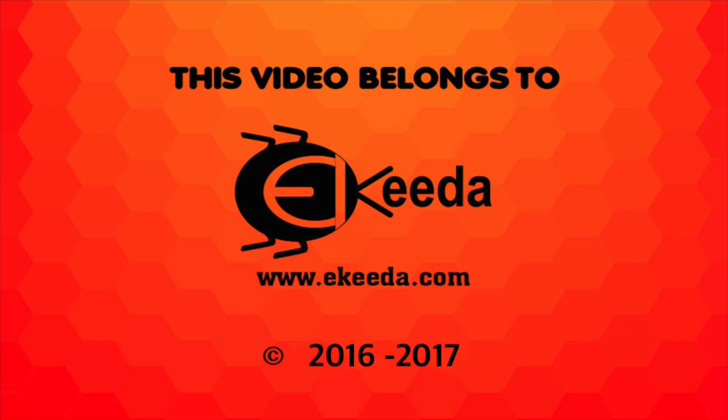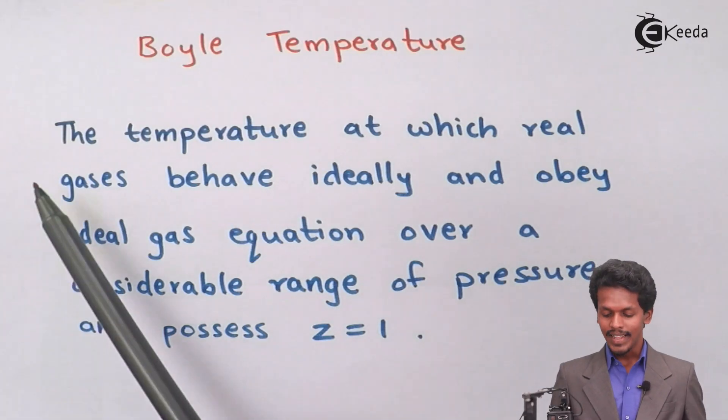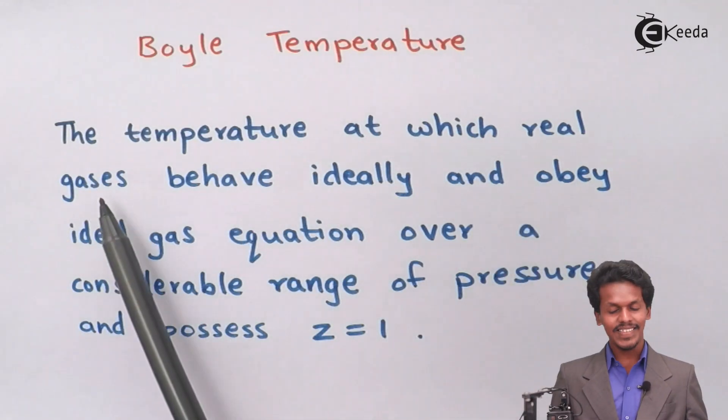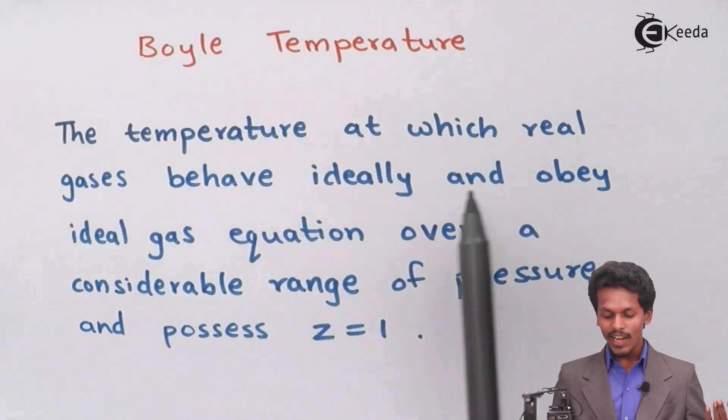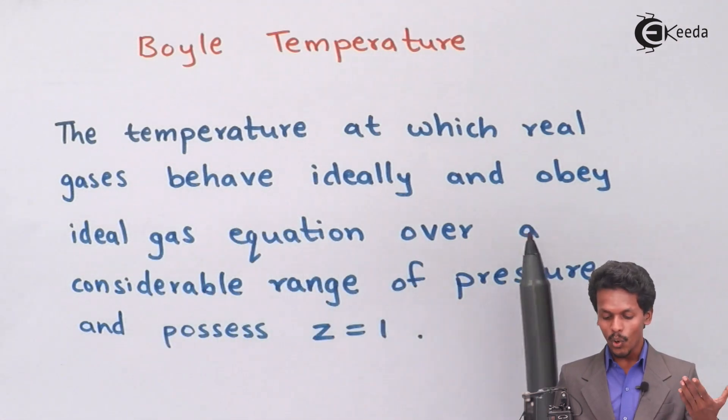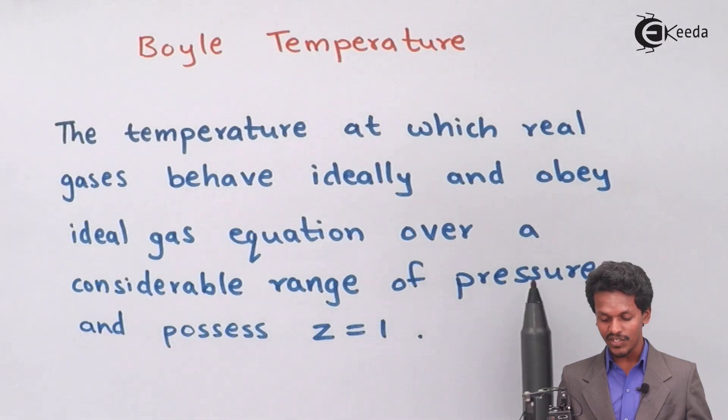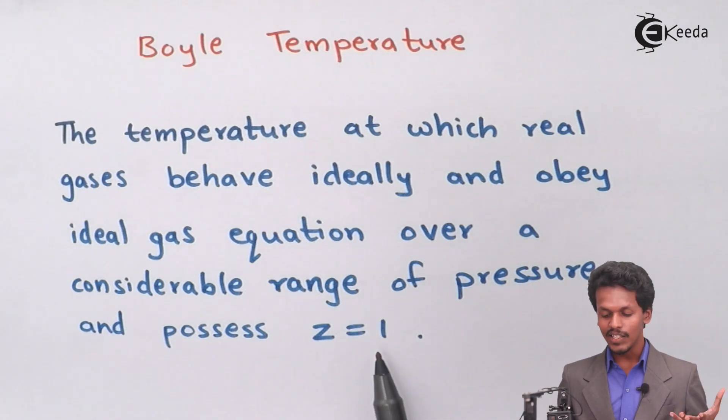Boyle temperature is basically related to compressibility of a particular gas. We have to learn at what temperature a gas can be liquefied. Related to the liquefaction of gases, we are going to talk about what is Boyle temperature. Boyle temperature is nothing but the temperature at which real gases behave ideally and obey the ideal gas equation over a considerable range of pressure, and possess Z equals to 1.